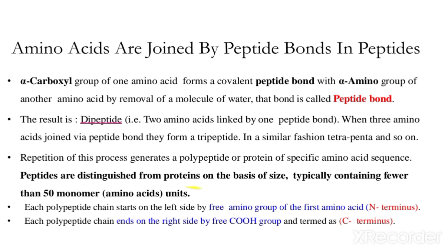Peptides are distinguished from proteins on the basis of size. Peptides are lesser in size than proteins, typically containing fewer than 50 monomer units (amino acids). In a protein structure, amino acids are present in greater quantities forming a complex structure. Each polypeptide chain starts on the left side with the amino group of the first amino acid — this is the N-terminus.